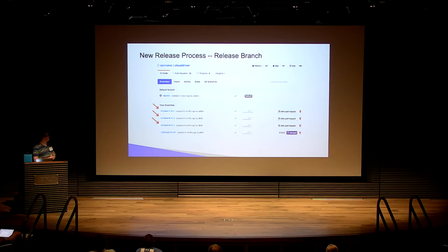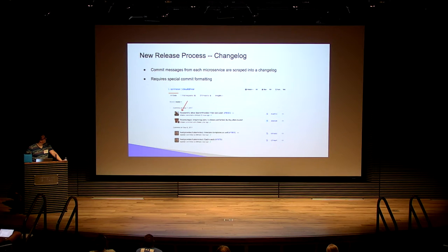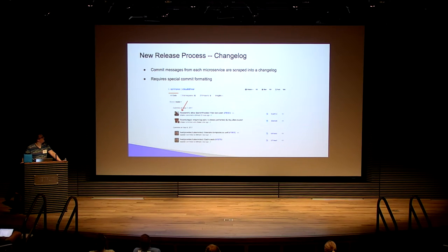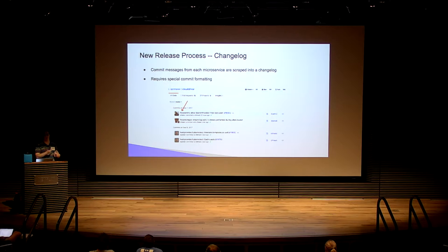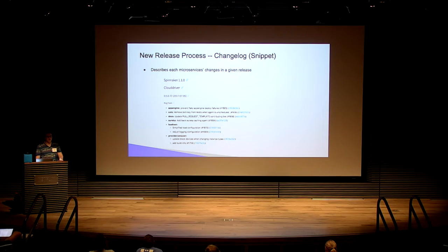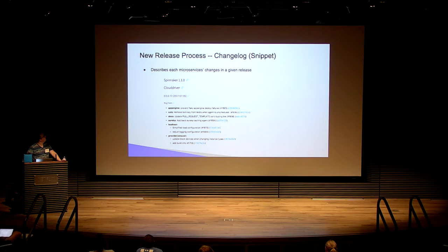The third new artifact is a changelog. Recently you may have seen specially formatted commit messages in the repositories — that's intentional. We have an automated tool that takes a commit range and scrapes out all changes in that range, building a nicely formatted YAML file summarizing what's included in a Spinnaker release. We publish these changelogs to spinnaker.io every time we cut a release, and send notifications through several channels.